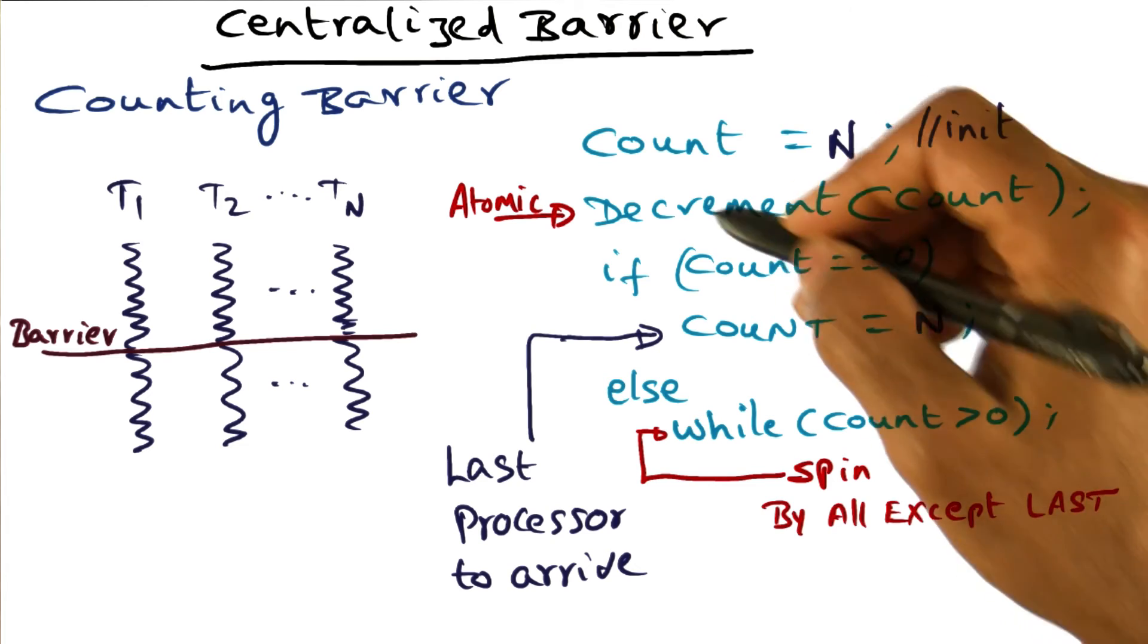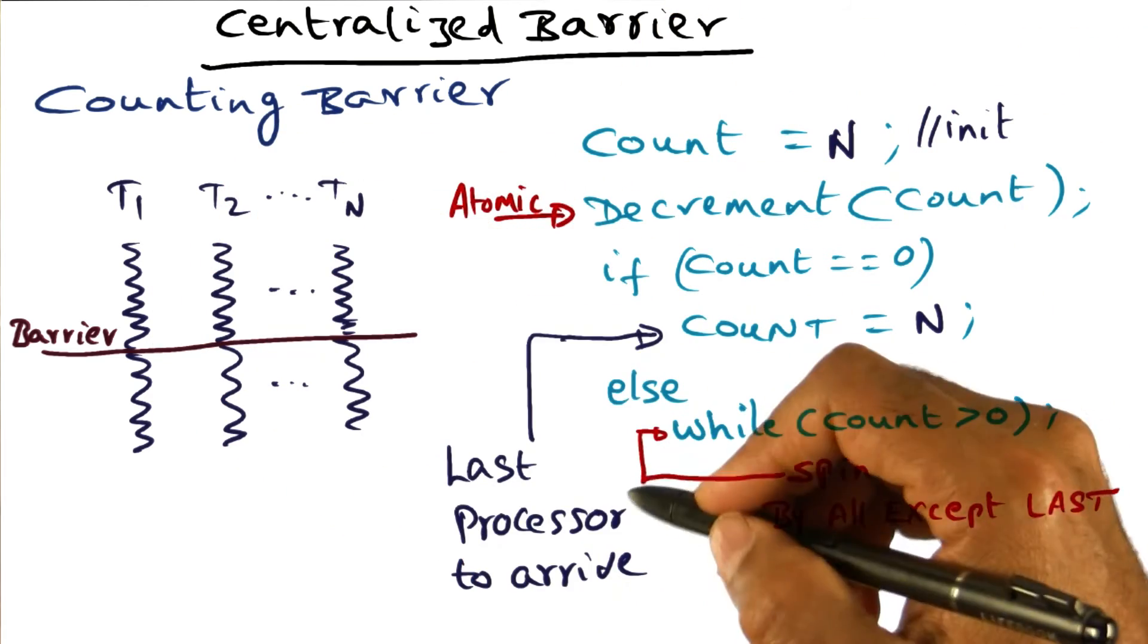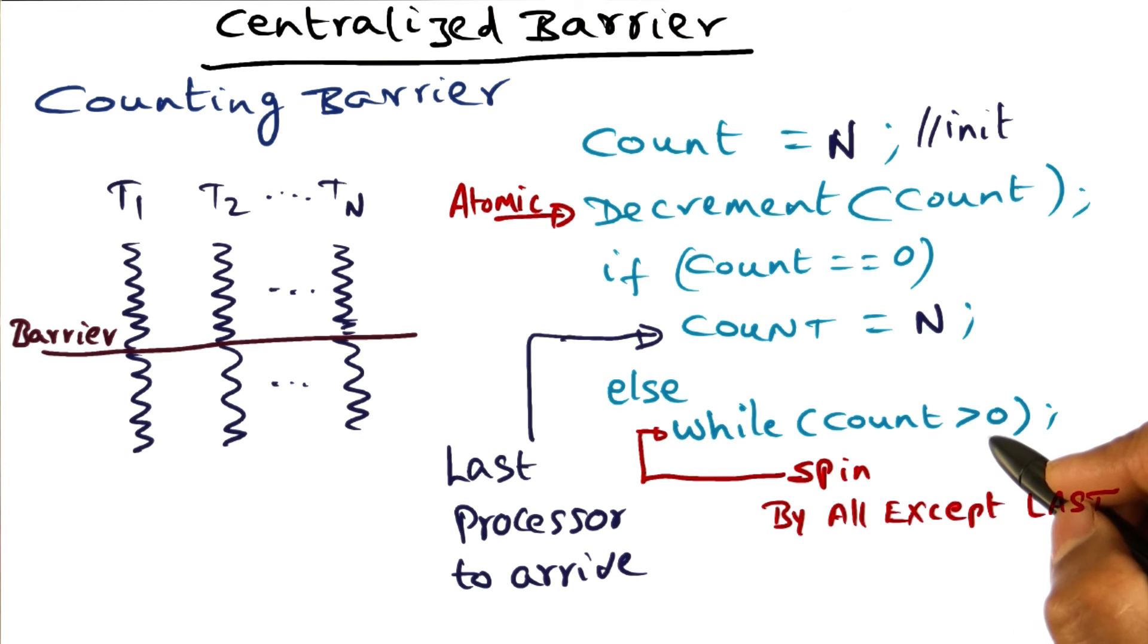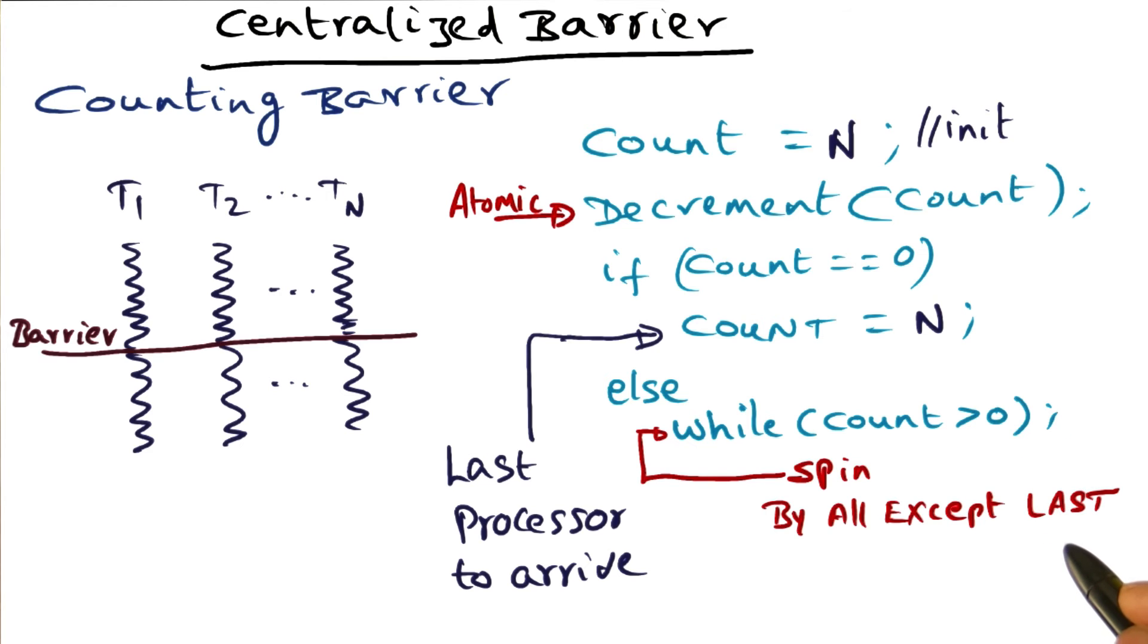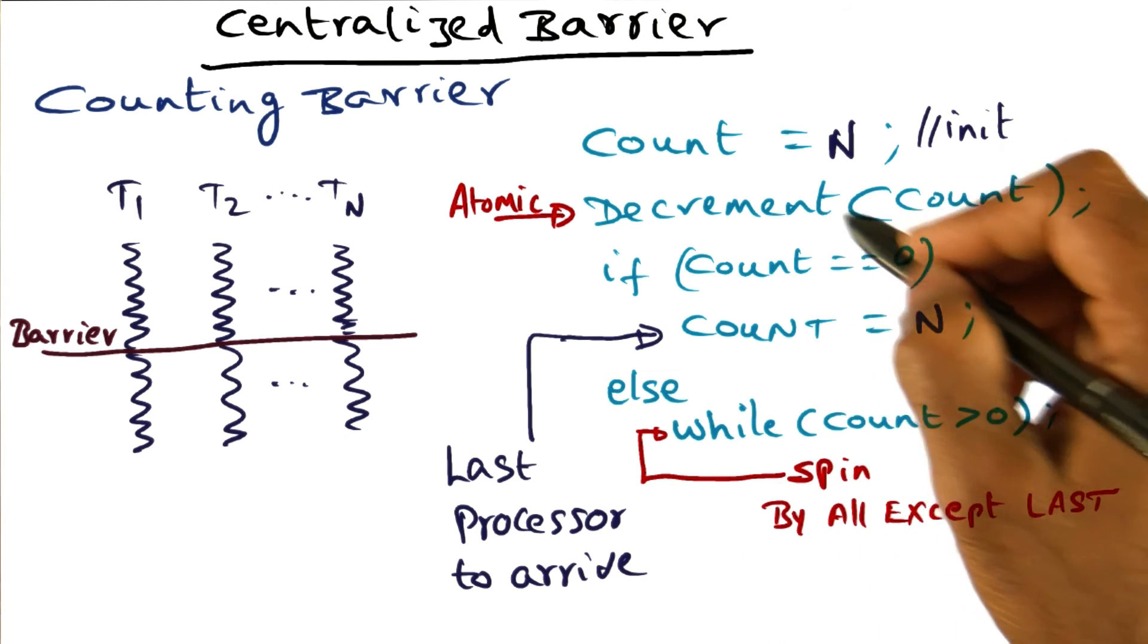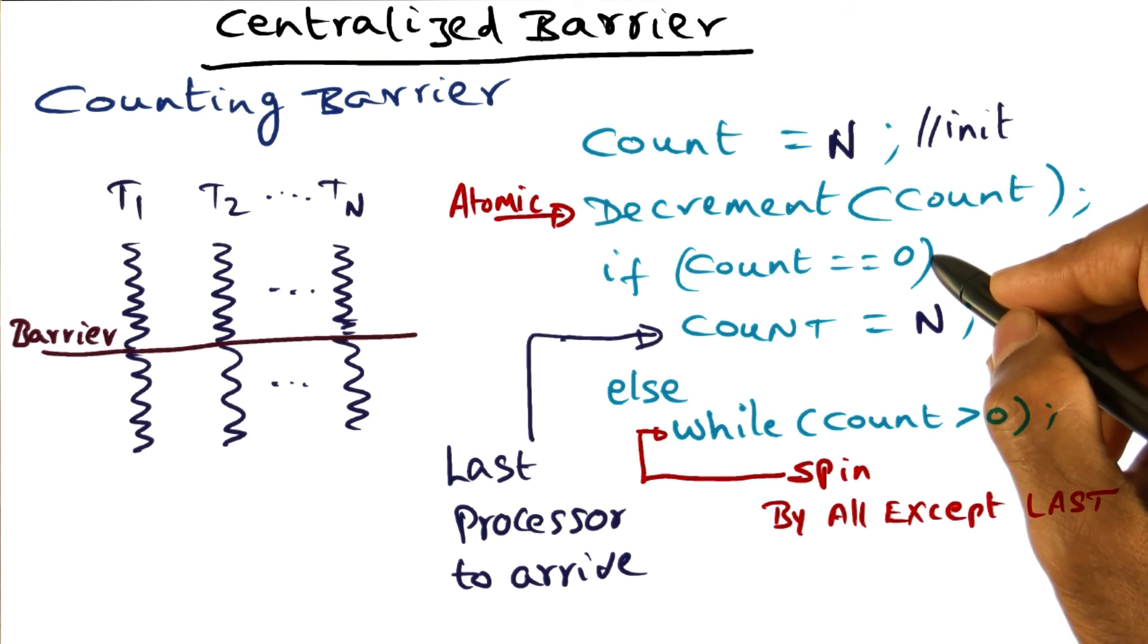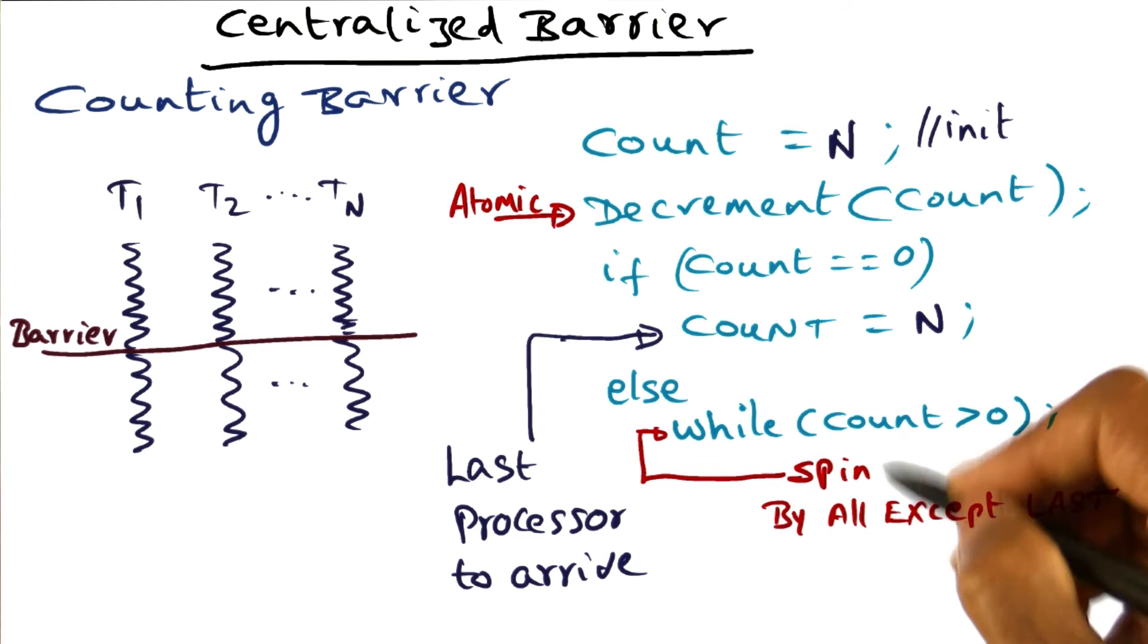Very simple algorithm. Decrement the count atomically when you come to the barrier. If the count is greater than zero, then you know that everybody has not arrived—spin. Everybody except the last guy will do the spin. The last guy that comes around decrements the counter and the counter becomes zero. Once the counter becomes zero, all the guys that are stuck here are going to be released.